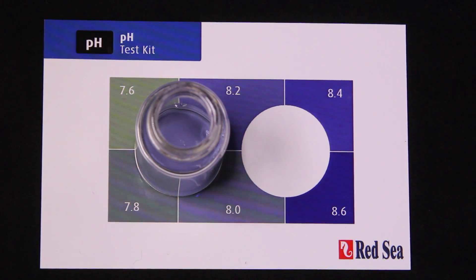All right, now looking at our pH test results, we can see that we have a pH in our aquarium of 8.0.